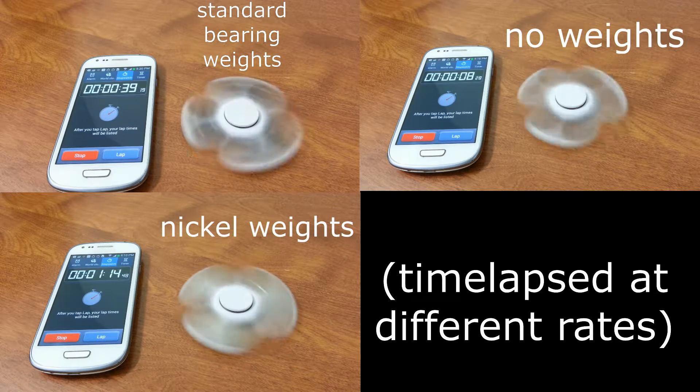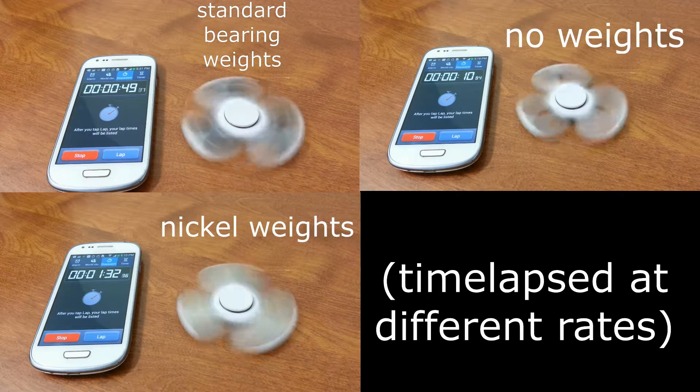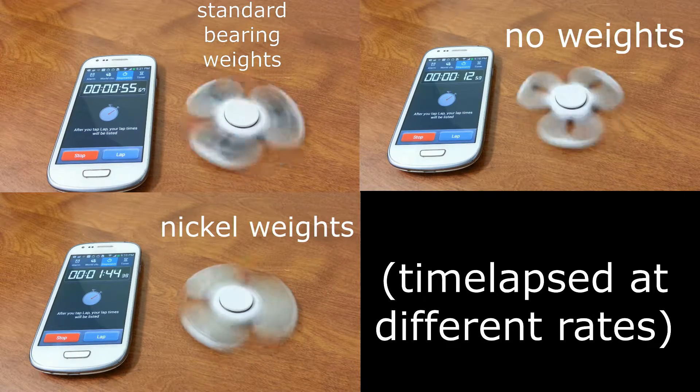More importantly, nickels are solid and do not have the hole in the center like bearings do. They work out to be almost double the weight.